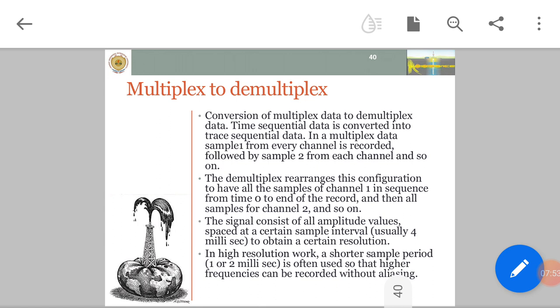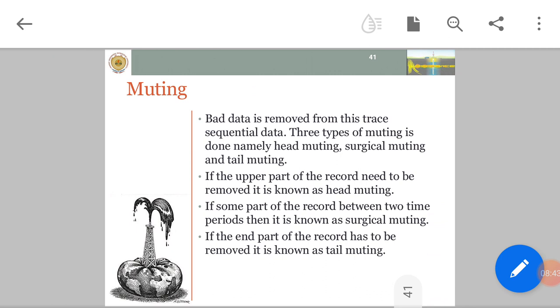The first step is to convert data from SEC-D to SEC-Y, multiplexed to demultiplexed. Time sequential data is converted into trace sequential data. In multiplex data, sample 1 from every channel is recorded followed by sample 2 from each channel and so on. The demultiplex rearranges the configuration to have all samples of channel 1 in sequence from time 0 to end of record, then all samples from channel 2 and so on. The signal consists of amplitude values spaced at a certain sample interval, usually 4 milliseconds. In high resolution work, a shorter sample period, 1 to 2 milliseconds, is used so that higher frequencies can be recorded without aliasing.